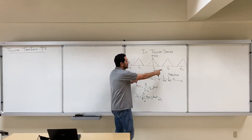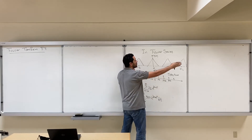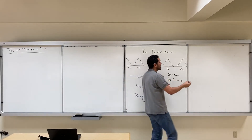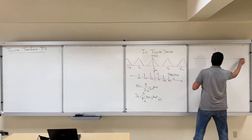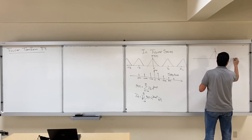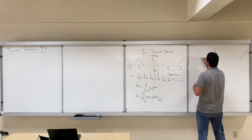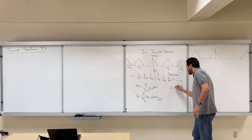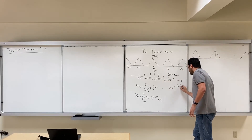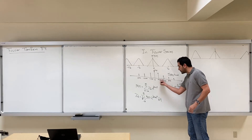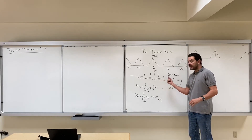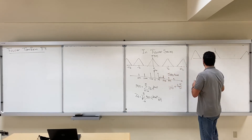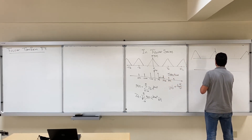If we imagine that T₀, the period of a periodic signal, is going to increase, the period will be bigger. So if we increase T₀, the period gets bigger and ω₀ — which we know is 2π over T₀ — will decrease. Since ω₀ is also the difference between harmonics, the harmonics are going to come closer to each other.